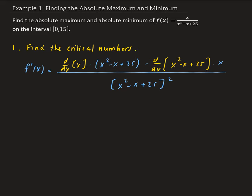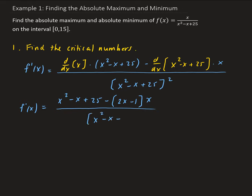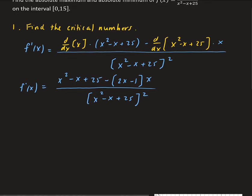This gives us: the derivative of x is 1, so we get 1 times (x squared minus x plus 25), minus the derivative of (x squared minus x plus 25), which is 2x minus 1, times x. All divided by (x squared minus x plus 25) squared. Let's go ahead and simplify this and then solve for our critical numbers.